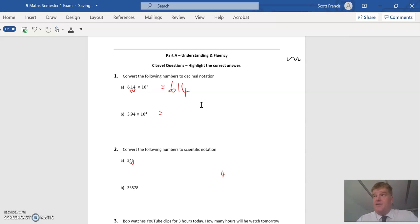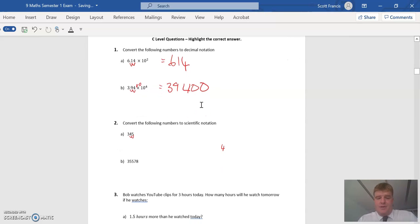Same thing here, 10 to the 4 is 10,000, so we're going to think it's going to be 39,400. Or if we move it one, two, three, four places, 39,400. Either way we get to the same spot.